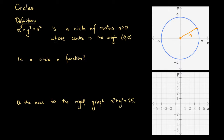We've said that the center is the origin — let's label that here. Consequently, this circle is a representation of the functional form x squared plus y squared equals a squared, because we've got a radius of a and the center of the circle at the origin.